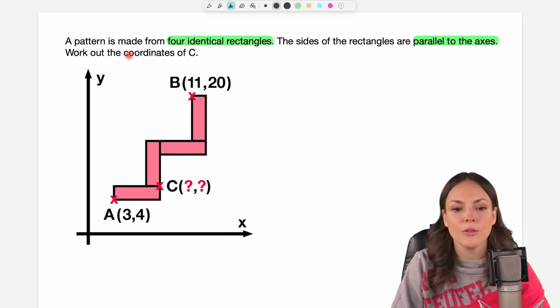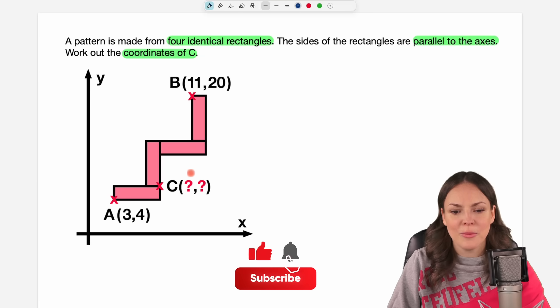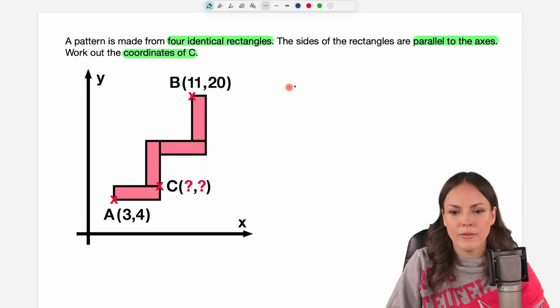Work out the coordinates of C. Here is our point C. We don't know the coordinates yet. We know the coordinates of point A and of point B. How can we find these coordinates?